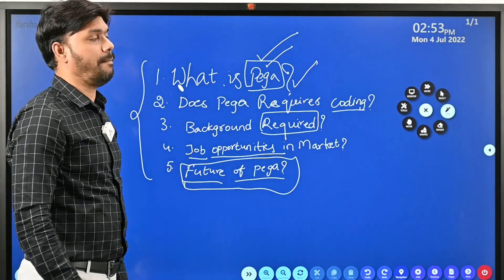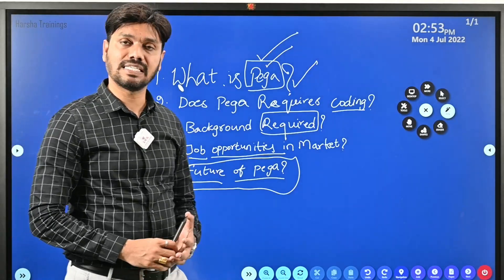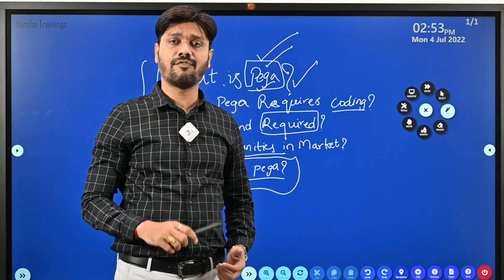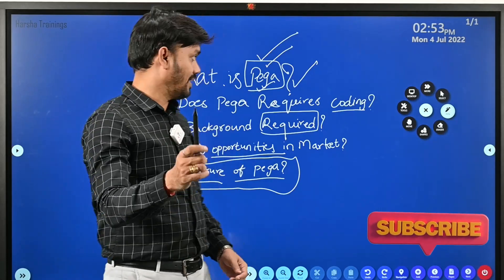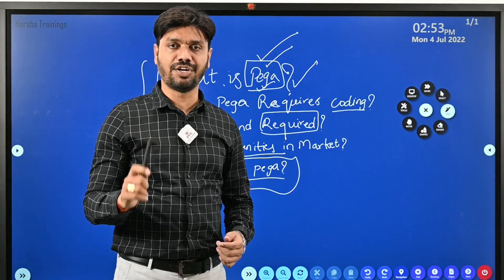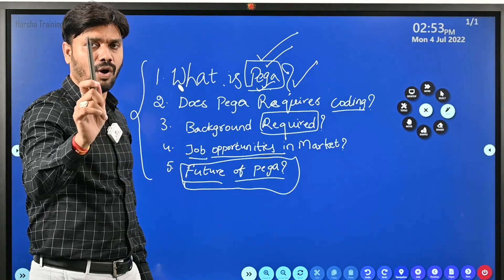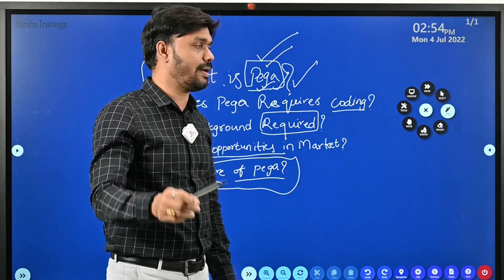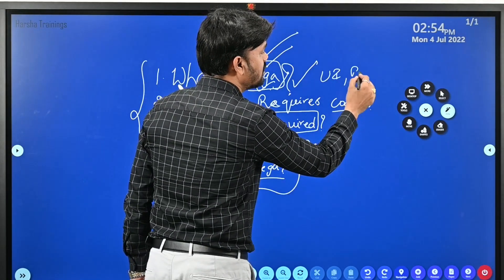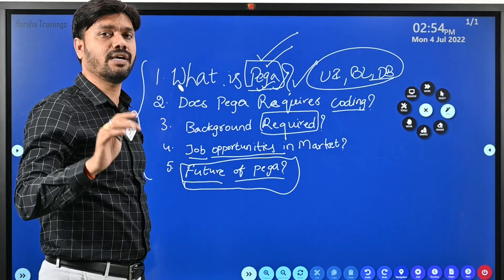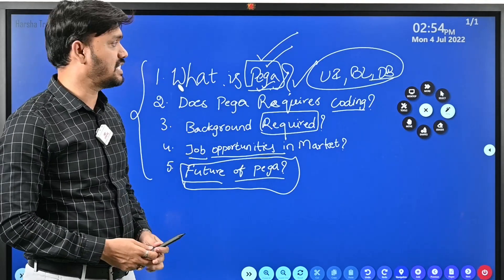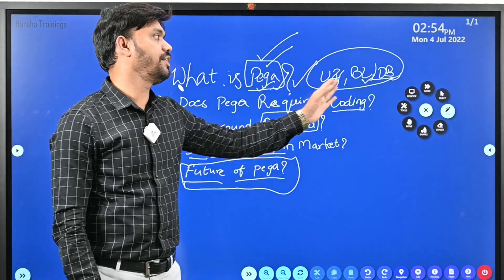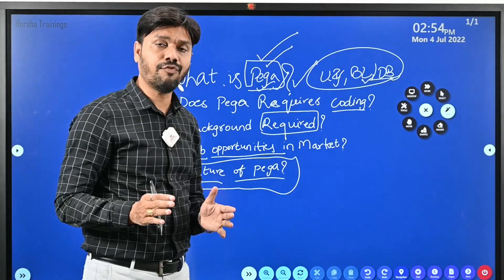PEGA is a tool that has been developed by a company called PEGA Systems. Using PEGA you are going to develop applications — similar to how you learn Java full stack or Python full stack for application development. Coming to PEGA, it is also the same: you are going to be an application developer working on user interface, business logic, and database — all three together which are needed for a typical web application.